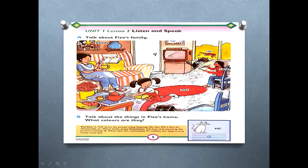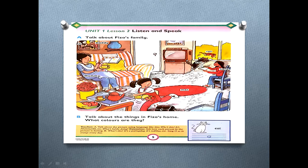In the family picture, Ali, Daddy, Mummy, Sara, and Fiza are all there. It's a family picture on the wall behind the sofa. Mummy is sitting on the sofa, reading a book, and having a teacup in her hand. Mummy is wearing a blue color dress.